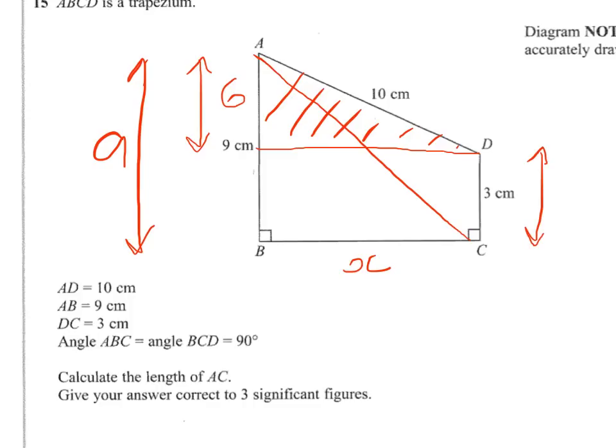So I've got to do 10 squared, subtract 6 squared and I've got to do the square root of that. Now you can do that on a calculator and you'll find that comes very conveniently to 8.